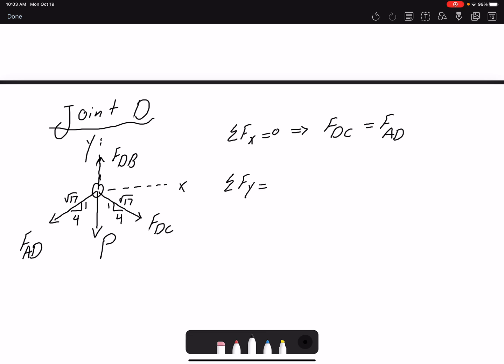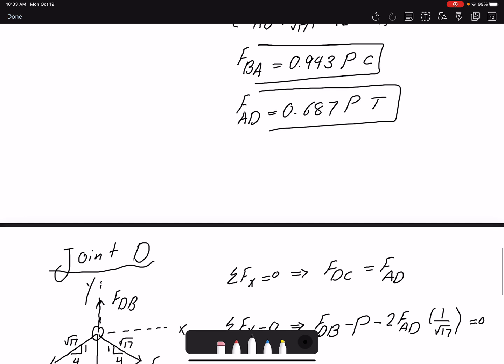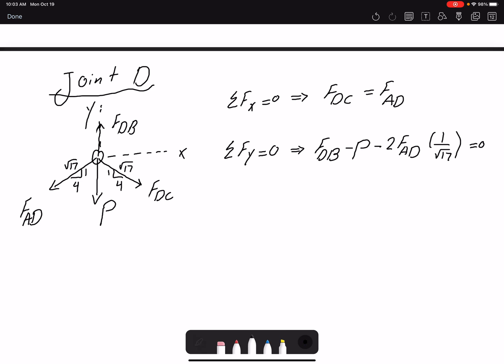Summation of forces in Y direction: I have FDB minus P, and FDC and FAD are the same thing. So I'm just going to write negative 2FAD, one over square root of 17, equals zero. We already found FAD in the previous joint. So I'm just plugging the value. T is for tension and P is the external force. I can find FDB to be 1.33P.